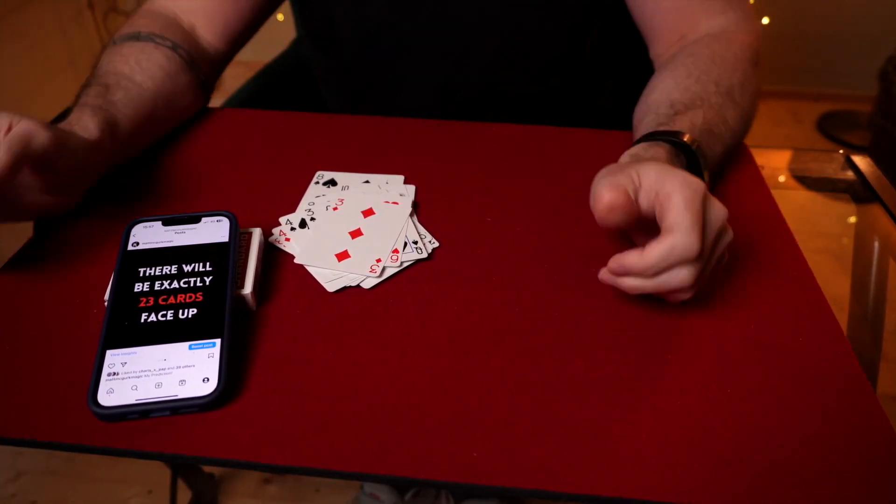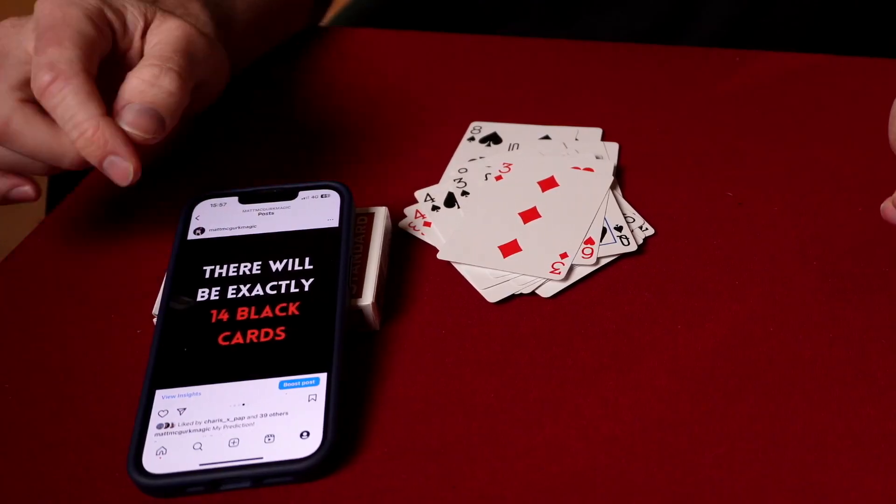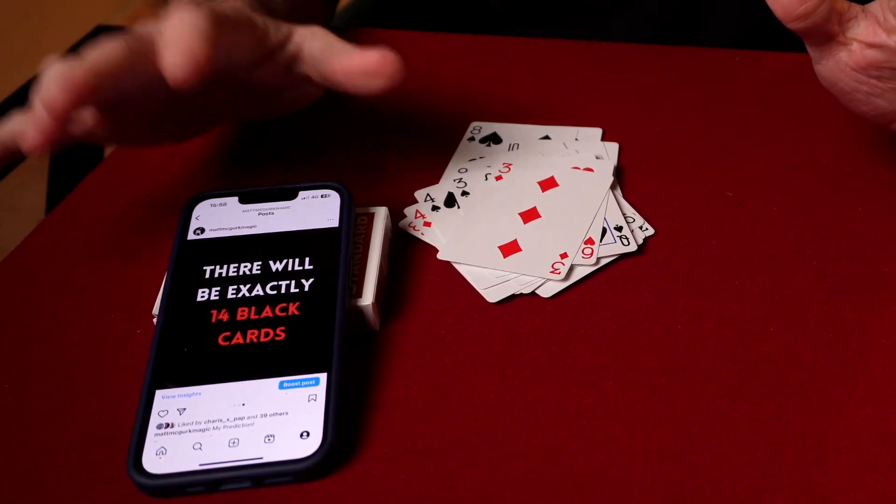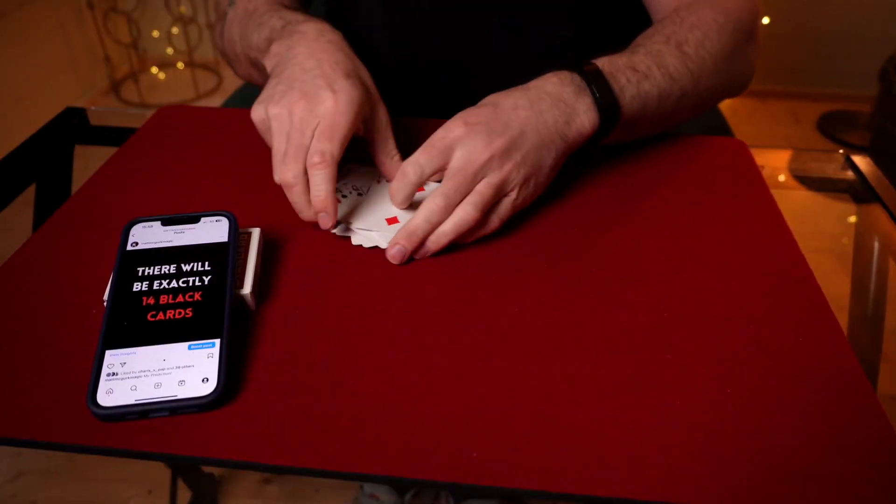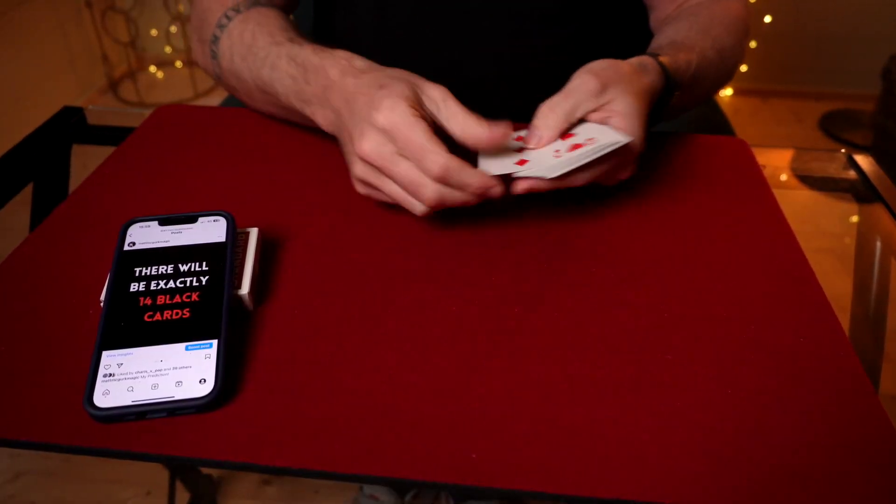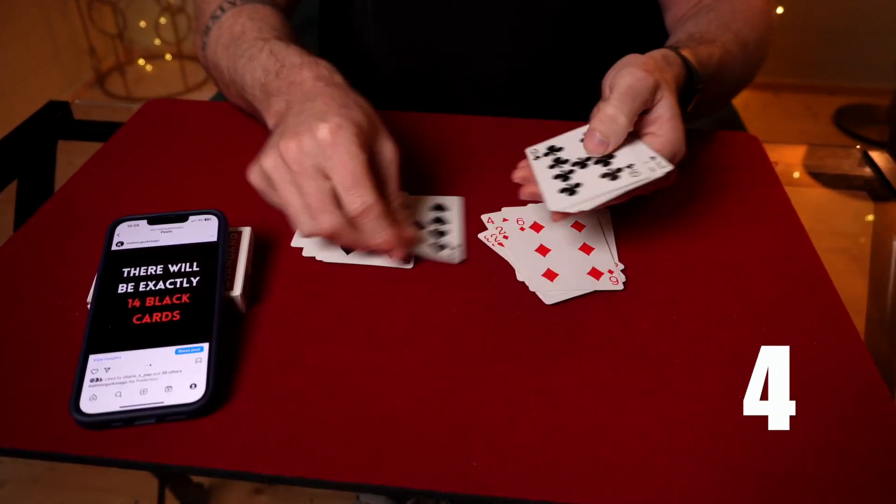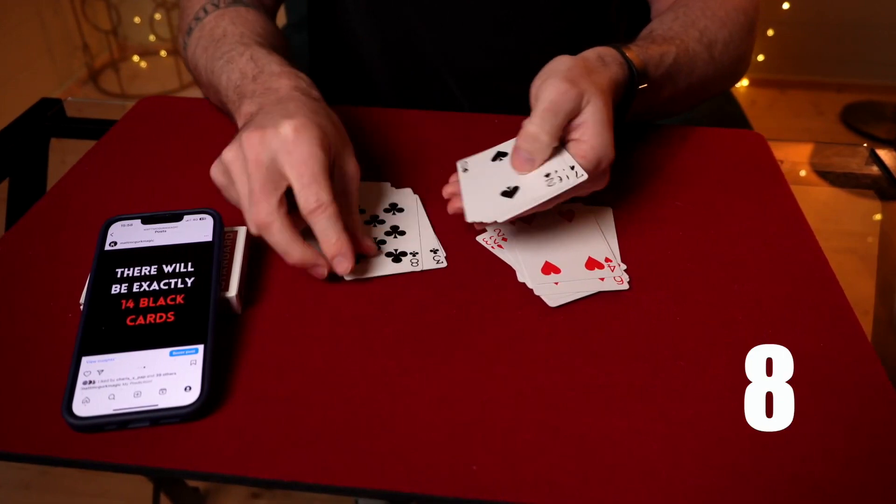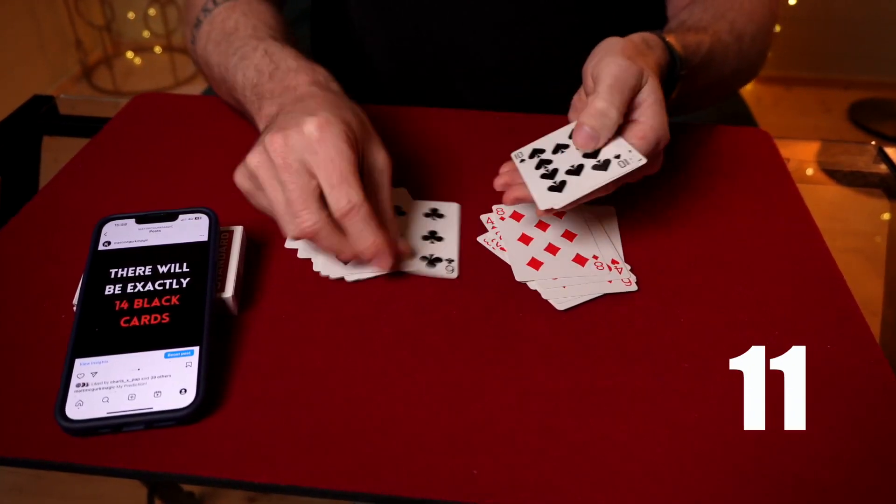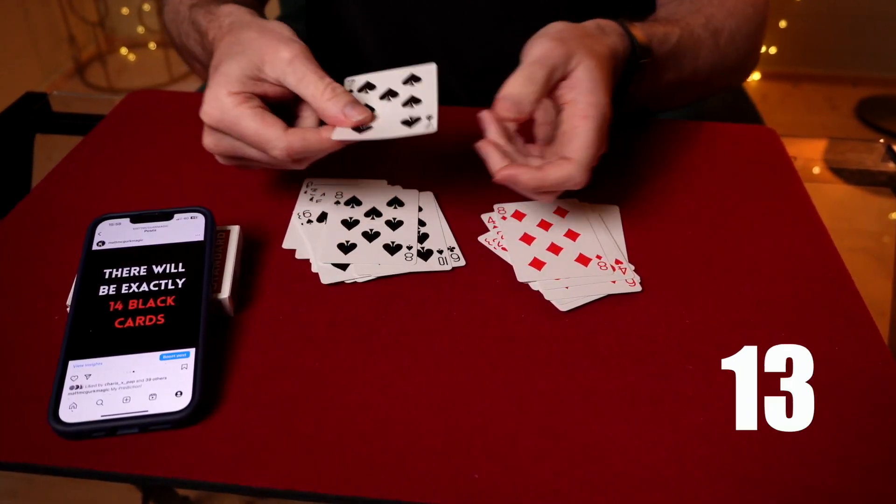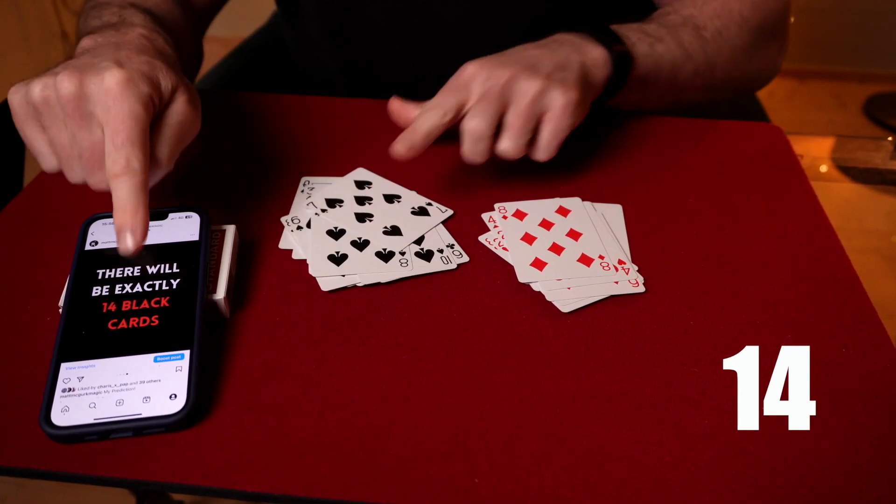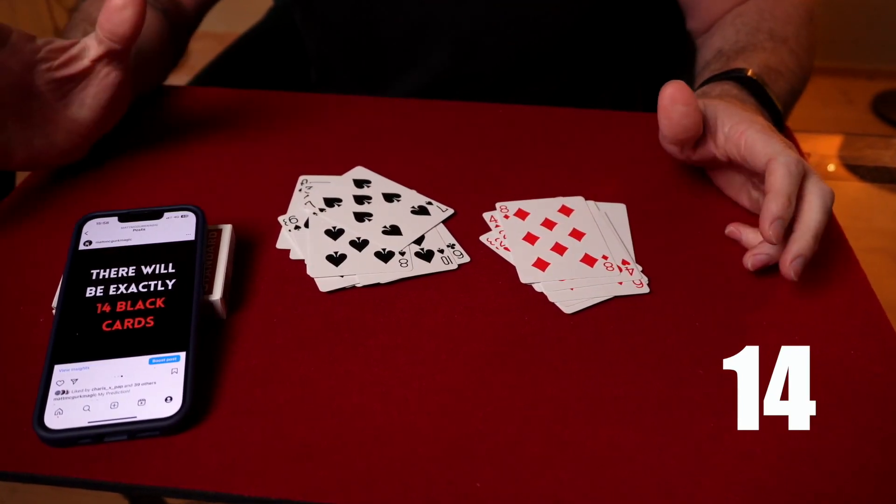But there's more to this prediction. Check this out. So it says there will be exactly 14 black cards. So we'll count the black cards. And that is one, two, three, four, five, six, seven, eight, nine, ten, eleven, twelve, thirteen, exactly 14 black cards. How crazy is that?